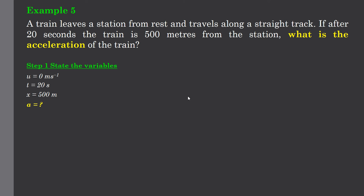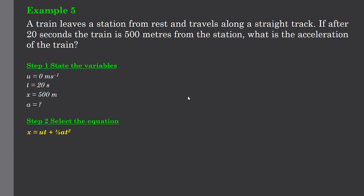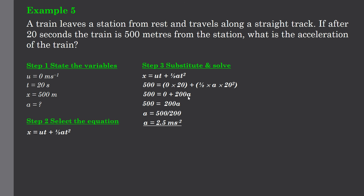Let's check an equation that has the u, t, x and a. And it is x equals ut plus a half at squared. Sub in our variables. Simplify that. So I've got 500 equals 200a. To get a by itself it's multiplied by 200. So let's do the reverse mathematical process. Let's divide both sides by 200. So the acceleration is 2.5 meters per second per second.